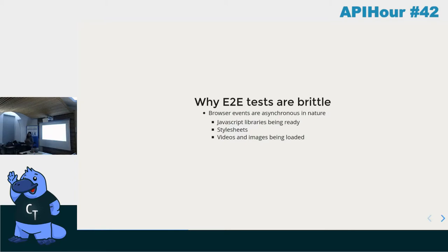We have to understand why end-to-end tests are known to be brittle. It's mostly due to the fact that browser events are asynchronous in nature. When you launch your app, there's time needed to wait — we wait for external libraries to load, for our page to render, for a video or image to load, or for parts of a page that load separately. These are the reasons why end-to-end tests can be difficult to predict.